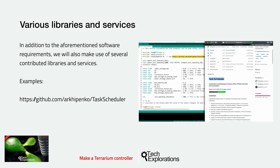There are various other software components that we'll use in this project. For example, there are libraries for the ESP32 and the Arduino IDE, such as the Task Scheduler library, which allows us to schedule specific things to happen on the ESP32 following a specific schedule. There are also Node-RED node libraries that we'll be installing and using. Thousands of contributors have written Node-RED nodes and even complete flows, sharing them with other makers so that we can integrate them into our projects.